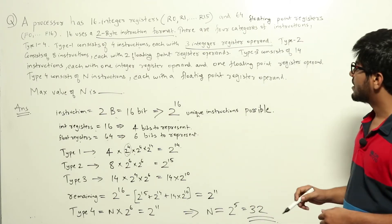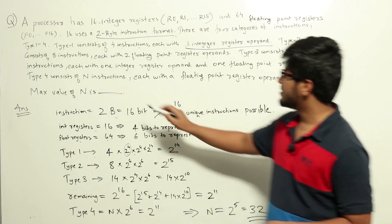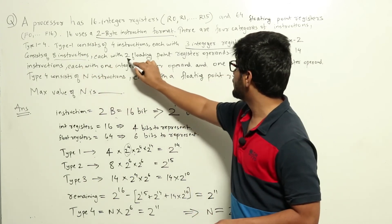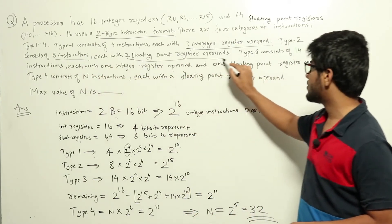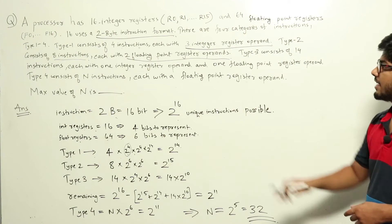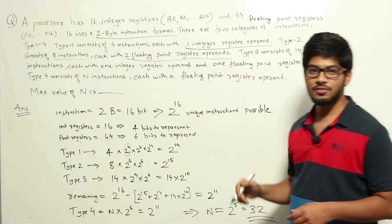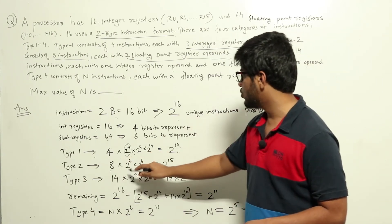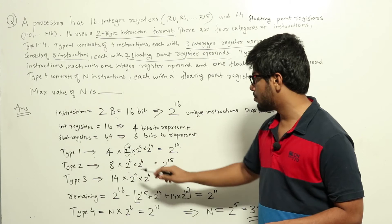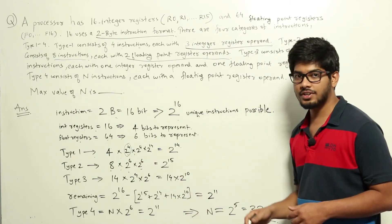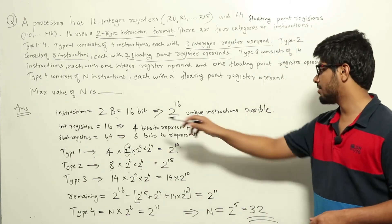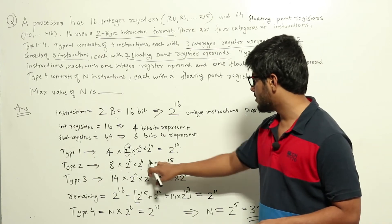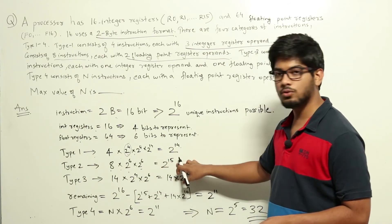Type 2 consists of eight instructions each with two floating point register operands. The total number of type 2 instructions is 8 into 2 power 6 into 2 power 6, since we need 6 bits to represent each floating point register. That adds up to 2 power 15.